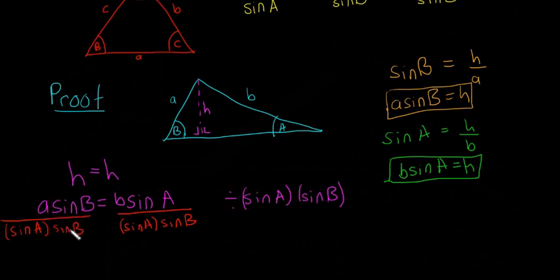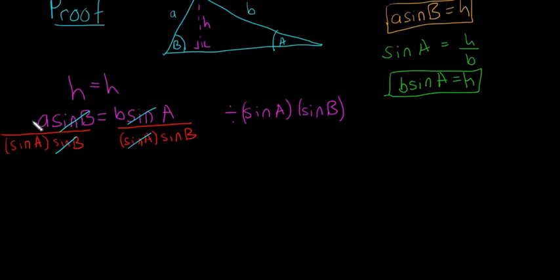It's a·sin(B) over sin(A)·sin(B) is equal to b·sin(A) divided by sin(A)·sin(B). I know that sounds confusing when I say it all, but hopefully you see that that's just two fractions equal to each other. This sine B will cancel with this sine B, the top and the bottom, and this sine A will cancel with this sine A. And we're going to be left with a divided by sine A is equal to b divided by sine B.